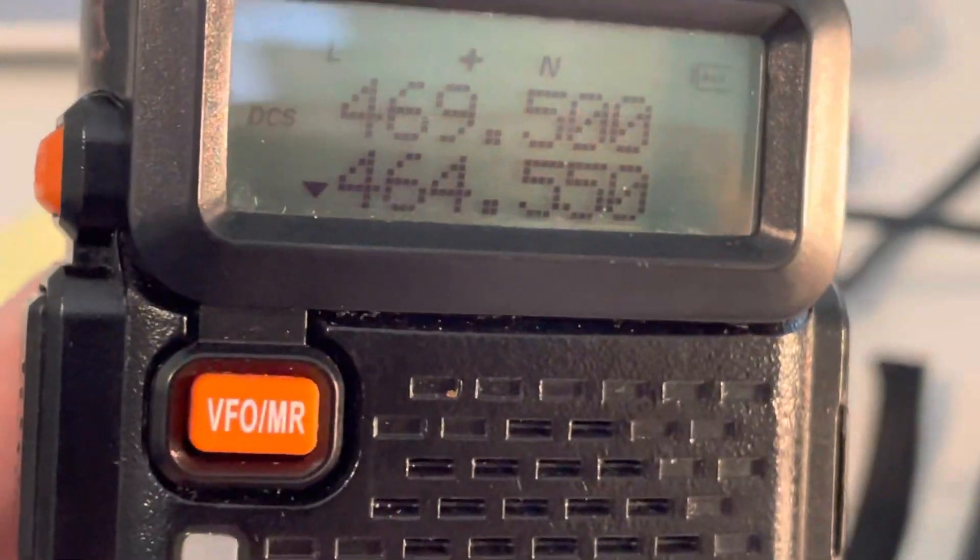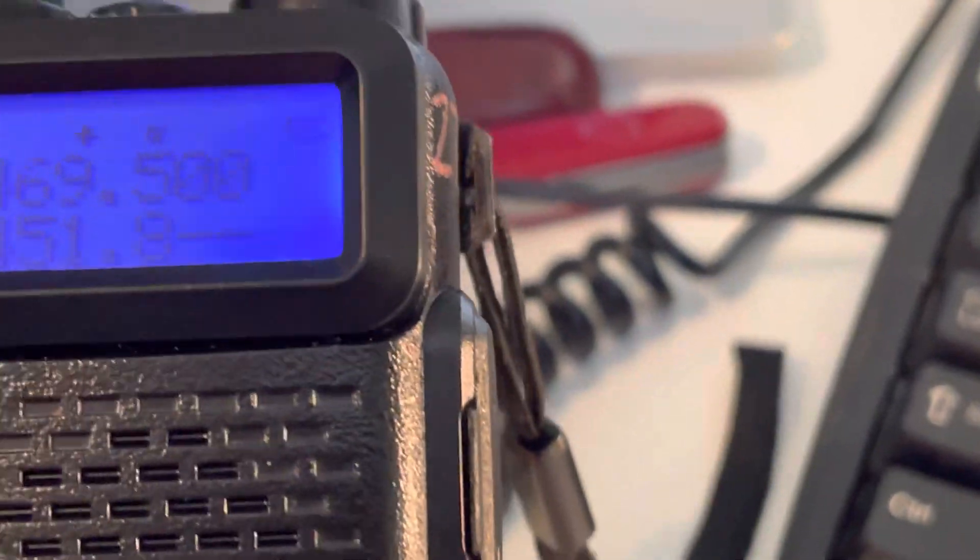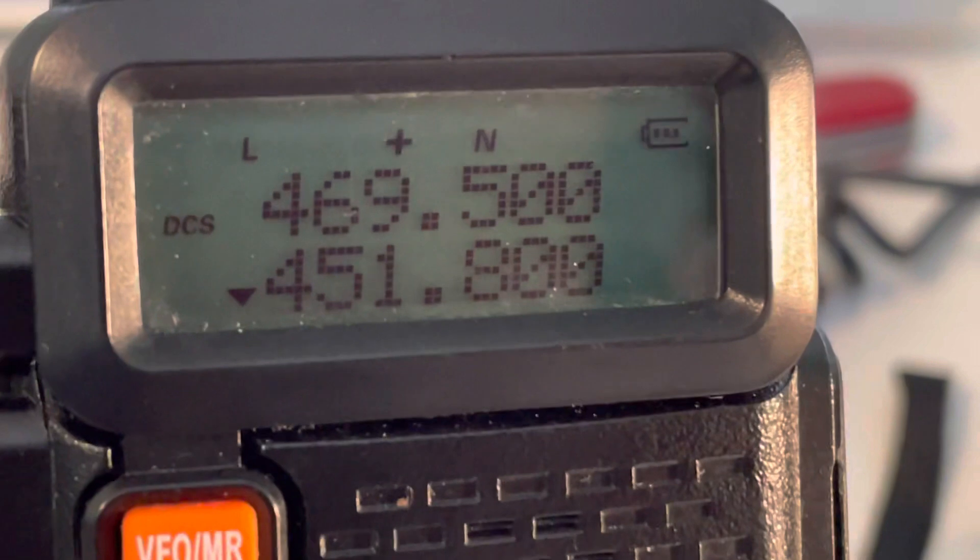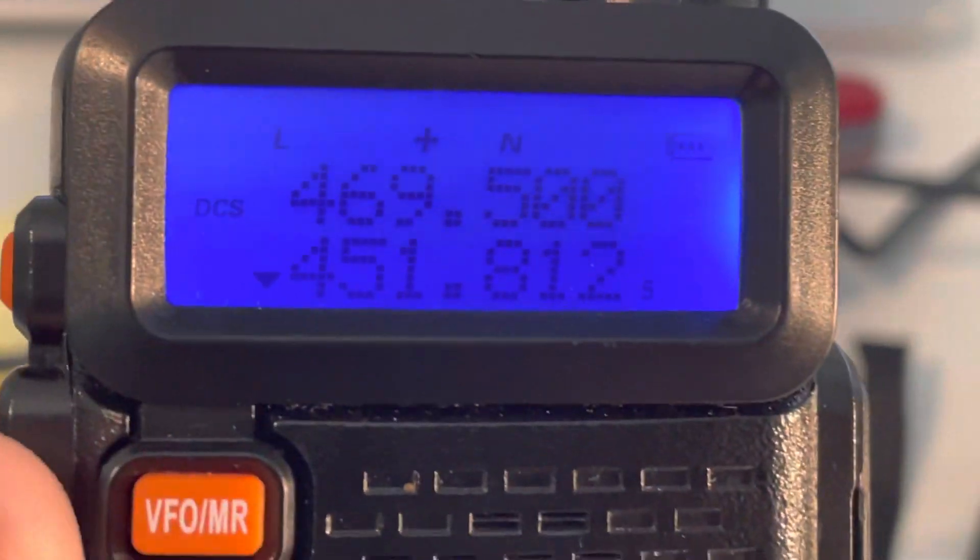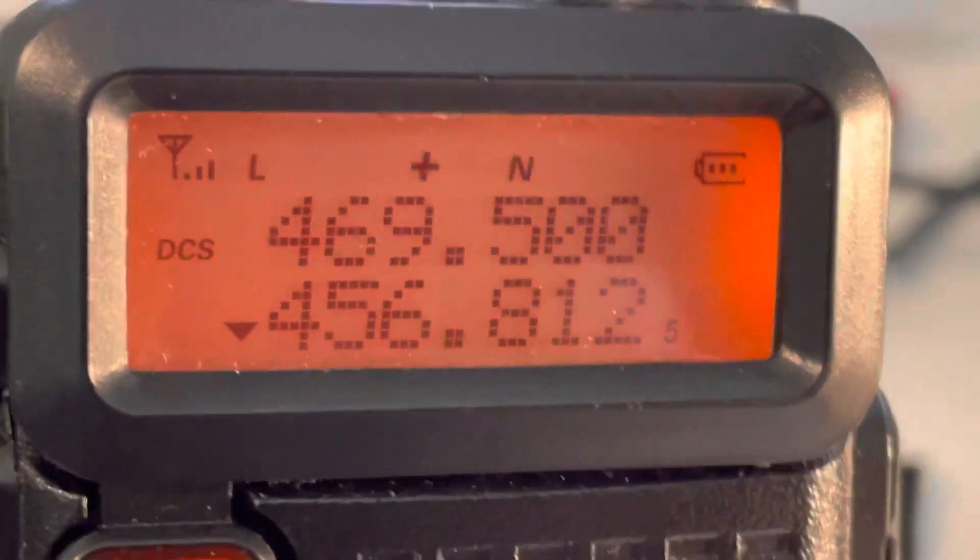But a temporary repeater using the standard 5MHz split, so that means that if you were using a temporary repeater on 451.8, the input would be 456.8. And if you were using one on 451.8125, that would be the input.